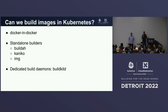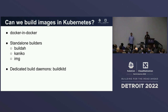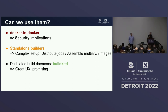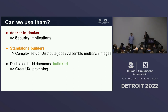The first option is Docker in Docker: you create a Kubernetes pod in which you mount the Docker socket, and from there you do Docker builds. You can also use standalone builders — builders dedicated to building images inside Kubernetes. And finally, you can use a dedicated build daemon, which is what BuildKit is about. The first option was a no-go from the start — there was no way we would give build pods access to being root on the Kubernetes nodes. The second option, standalone builders, actually worked pretty well, but was more complex for multi-arch because it means distributing jobs: one on x86 nodes, one on ARM nodes, and one to assemble the multi-arch image.